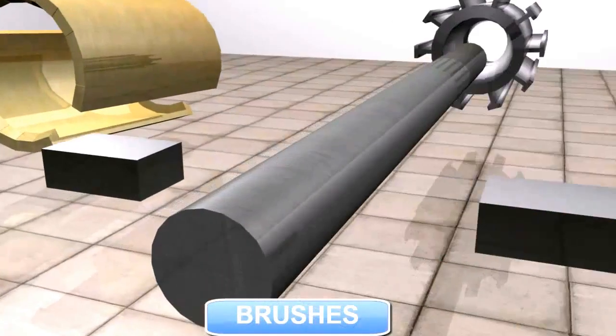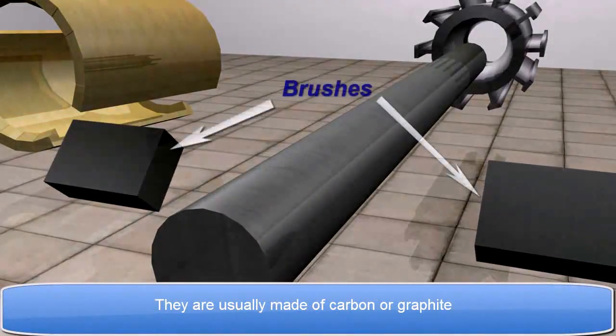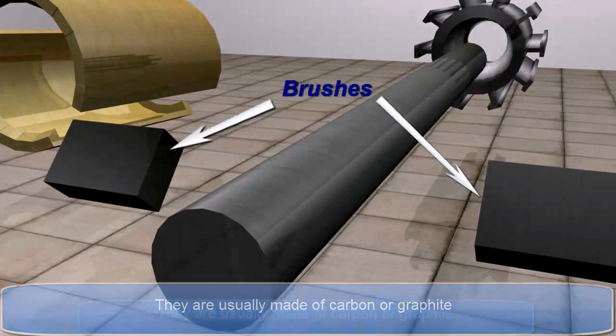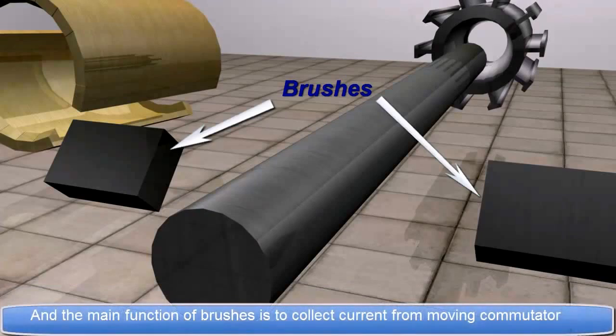Brushes. They are usually made up of carbon or graphite. And the main function of brushes is to collect current from moving commutator.